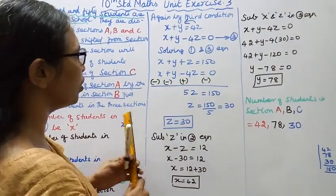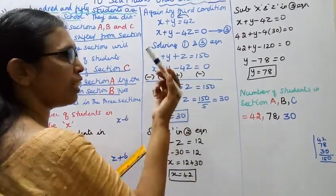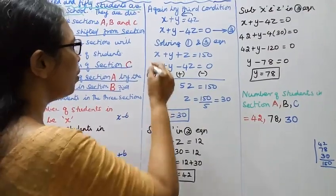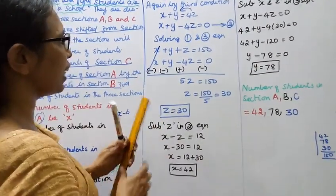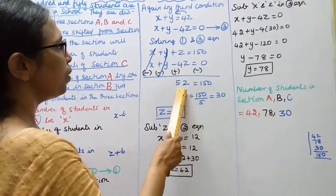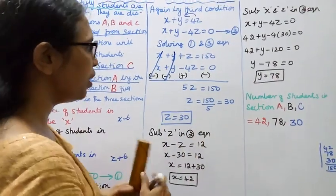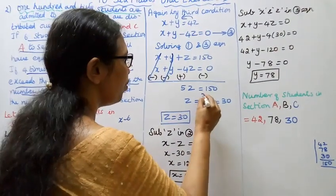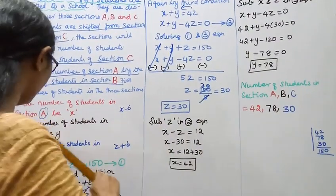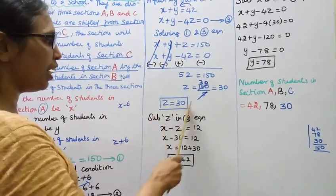Cancelling opposite signs: x and x cancel, y and y cancel. We get z plus 4z equals 5z, and 150 plus 0 equals 150. So 5z equals 150, z equals 150 divided by 5, which gives z equals 30. The number of students in section C is 30.